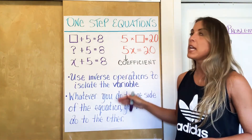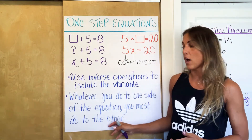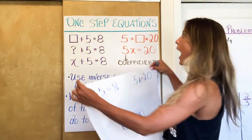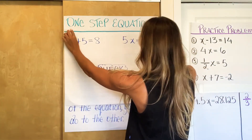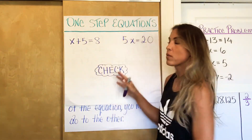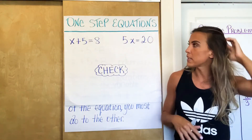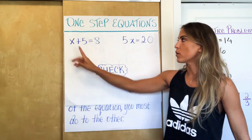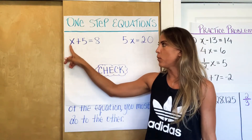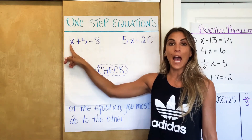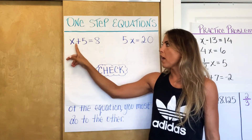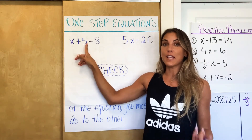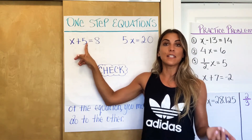Whatever you do to one side, you have to do to the other — otherwise the sides wouldn't be equal, and that's the definition of an equation. These are our two main important points. So even though we already know the answers are three and four, I'm going to show you how to use these strategies. Let's look at X plus five equals eight. The X is on the left side, and right now X is being added by five.